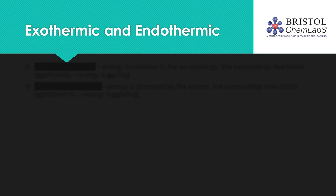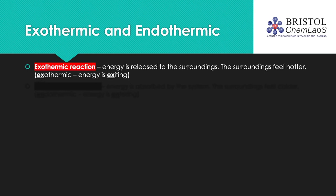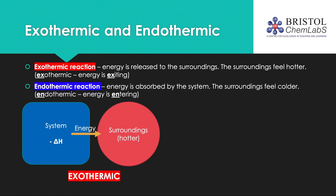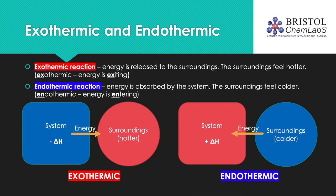This next part of the session is going to focus on exothermic and endothermic reactions, and activation energy. An exothermic reaction releases energy to the surroundings, and as a result the surroundings feel hotter. A good way to remember this is that exothermic means energy exiting the system. Energy is transferred from the system to the surroundings in an exothermic reaction, resulting in a negative energy change of reaction. In contrast, an endothermic reaction is where energy is absorbed by the system, and the surroundings feel colder. In an endothermic reaction, energy is entering the system, so the energy change is positive.